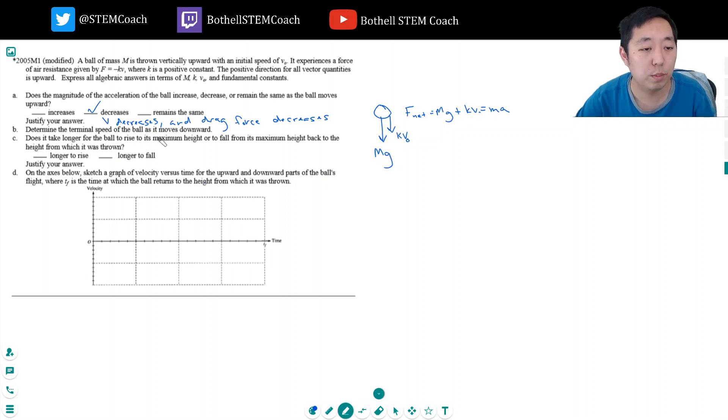Determine the terminal speed of the ball as it moves downward. So now as it's moving downward, here's what's happening. I still have MG in this way. But as it's falling, see the direction of this force always opposes the velocity. So if the velocity is down, then I have this kv on the top.